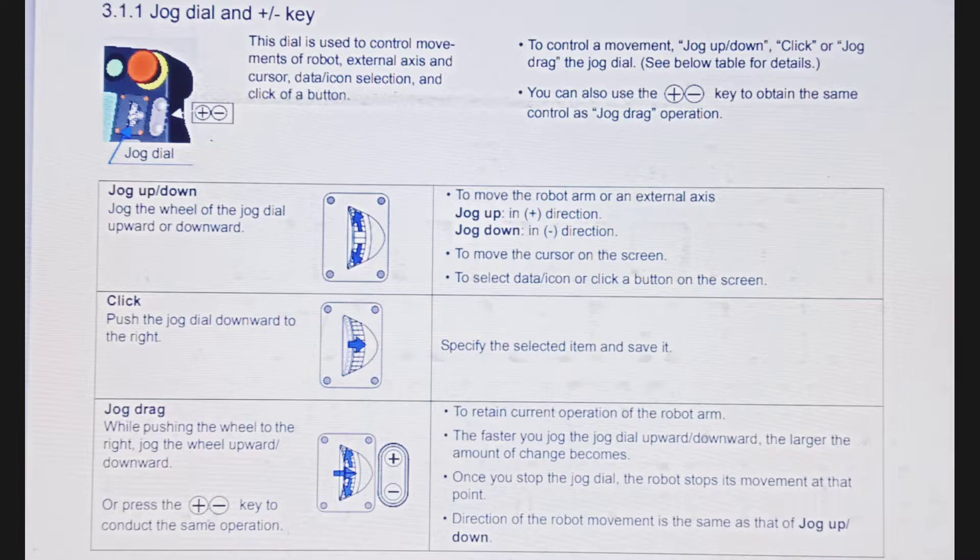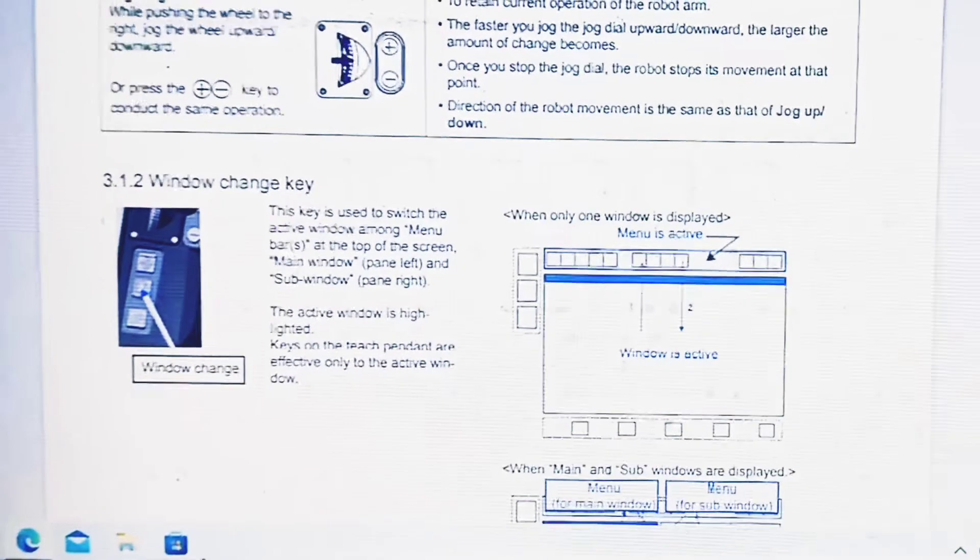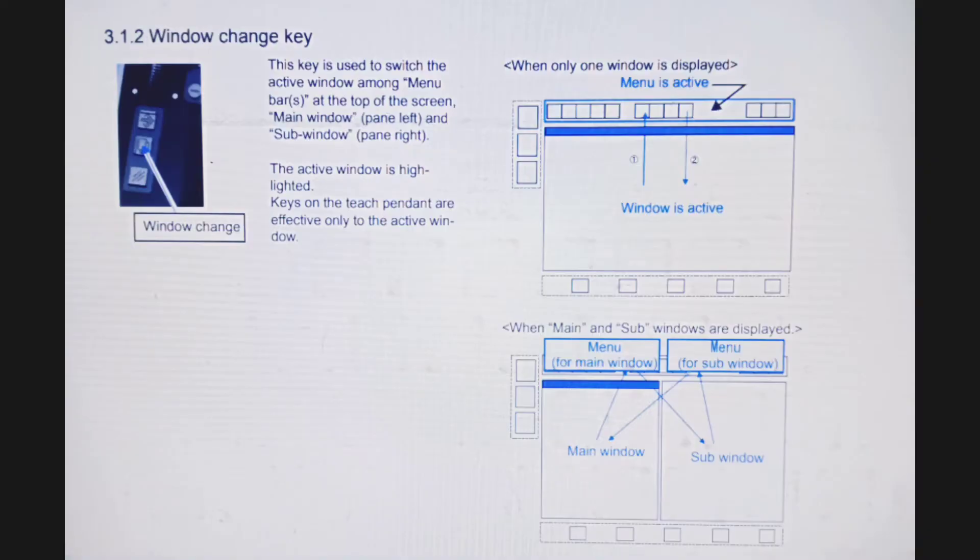Now another point is the window change key. This key is used to switch the active window among menu bars at the top of the screen, main window pane left, and sub window pane right.